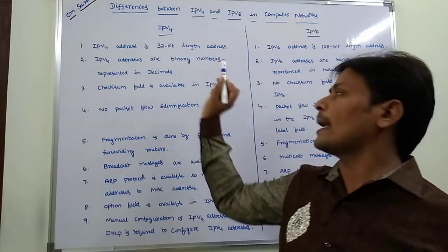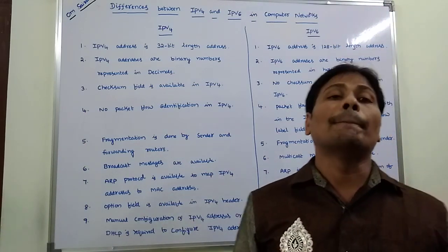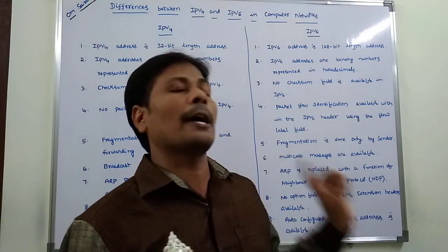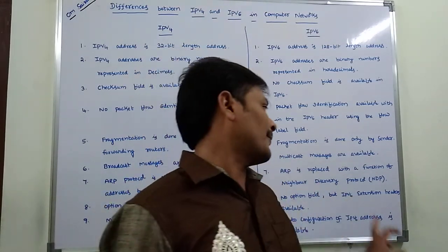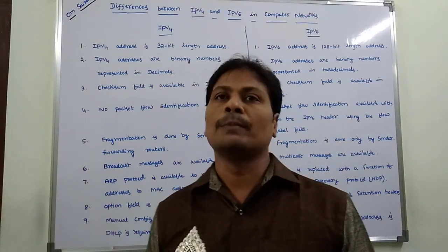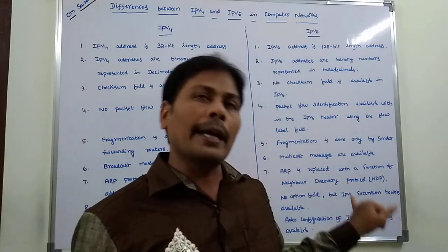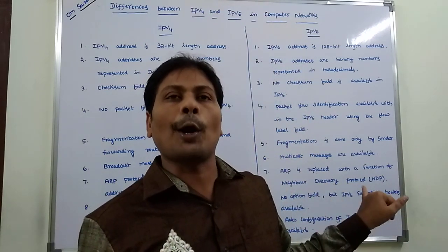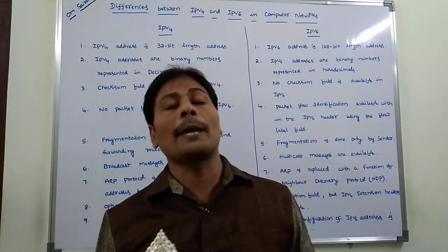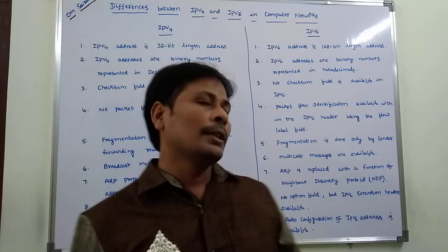Eighth point: in the case of IPv4, the option field is available. But in the case of IPv6, there is no option field. Instead of the option field, IPv6 extension headers are available.